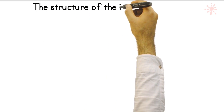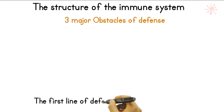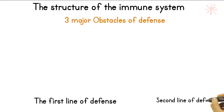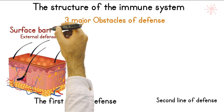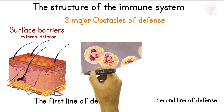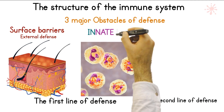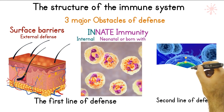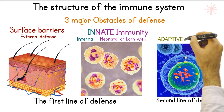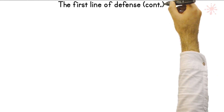This extensive network of billions of cells working together comes down to three major parts. The first obstacle a germ will face is the surface barrier. The second layer of defense is innate immunity, which we are born with and acts internally inside the body. Both are considered the first line of defense. The second line of defense is called adaptive or acquired immunity.